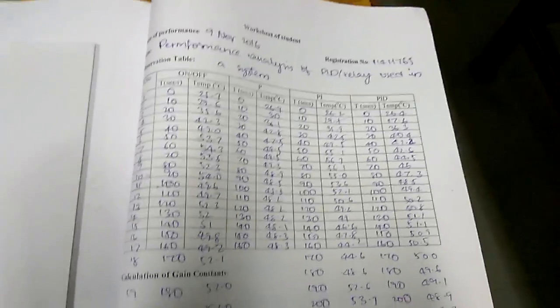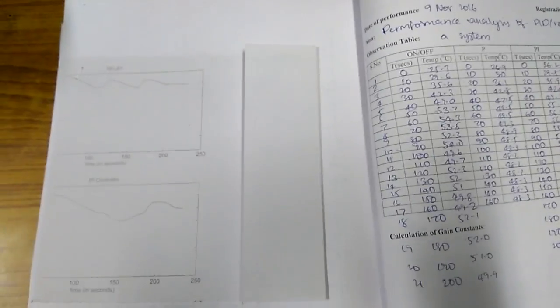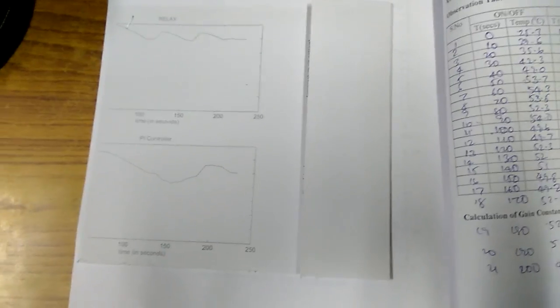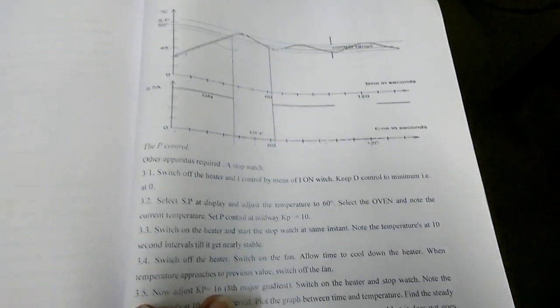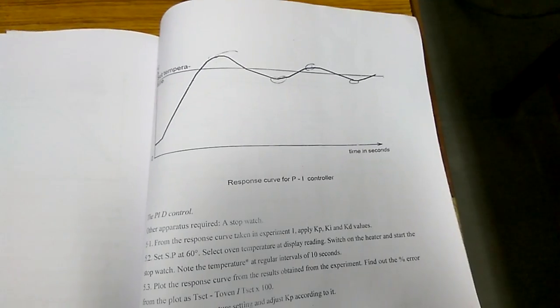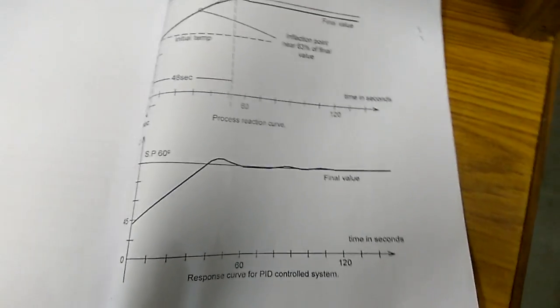These are sample readings of time versus temperature of the oven taken by one of my students. You have to make the table and plot the graphs as well. As you can see, these graphs have been plotted using MATLAB software, but you can also plot them using simple graph paper and pencil. The sample graphs of relay, proportional controller, PI controller, and PID controller are already given in the lab manual. Once you draw the graphs with the values you obtained, you have to compare the responses — which one is faster, which one has maximum peak, which one has less steady-state error — and give conclusions about which part the response is much better compared to the others.